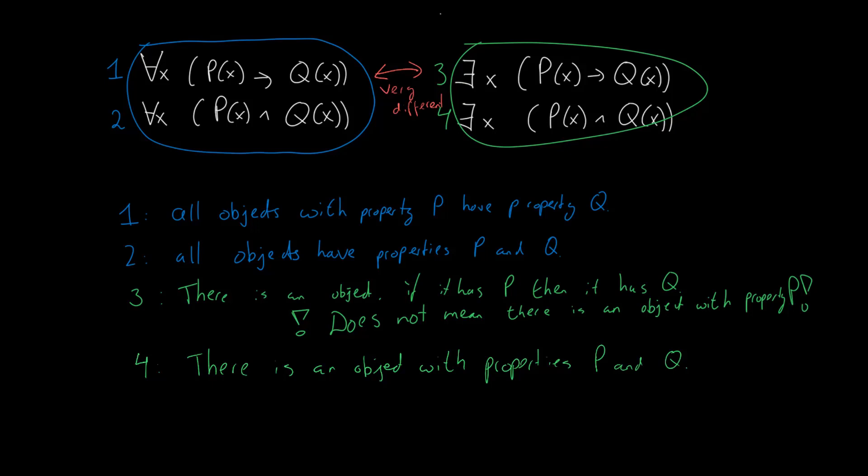Whereas statement 1 is very useful to describe a group of objects having a certain property. The ones you see most often are statement 1 and statement 4.